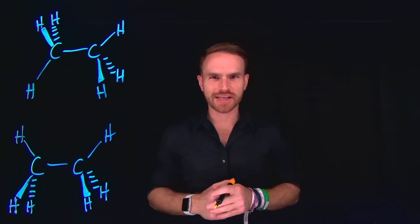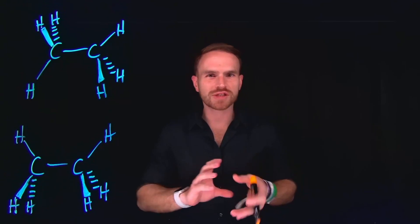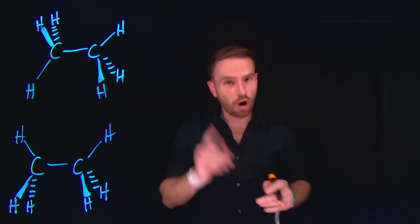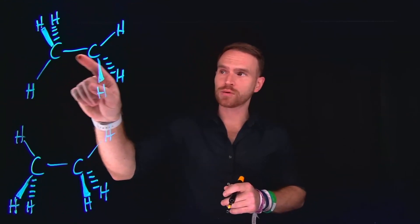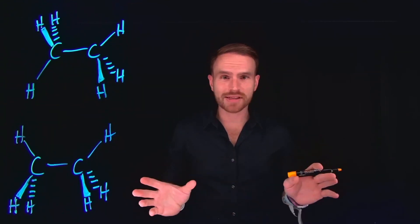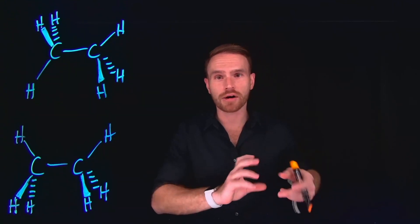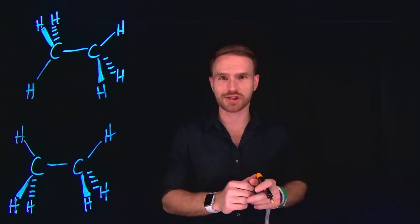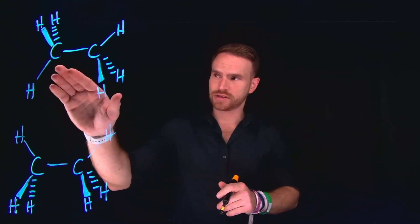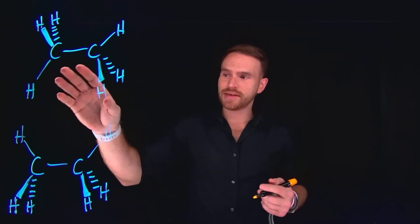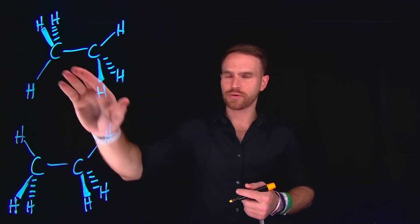Importantly, we can use Newman projections to predict the overall stability of a molecule. Molecules typically tend to orient in ways that are lower in energy and thus more stable. Rotation around sigma bonds is readily accessible and possible for molecules — you can always rotate around sigma bonds. It's only pi bonds that lock bonds into position where there's no rotation possible. Let's take a look at ethane, CH3CH3, for example, which can exist in either of these conformations.